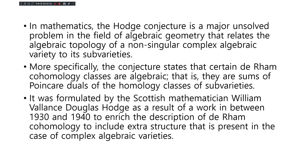It was formulated by the Scottish mathematician William Wallace Douglas Hodge as a result of work between 1930 and 1940, to enrich the description of de Rham cohomology to include extra structure that is present in the case of complex algebraic varieties.